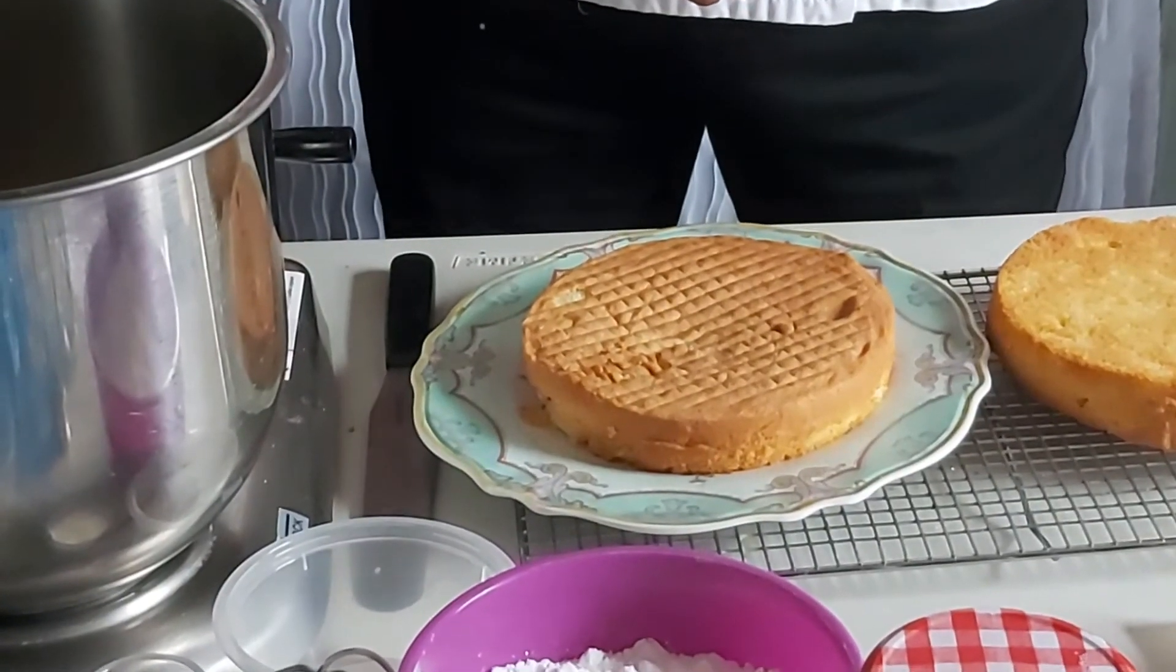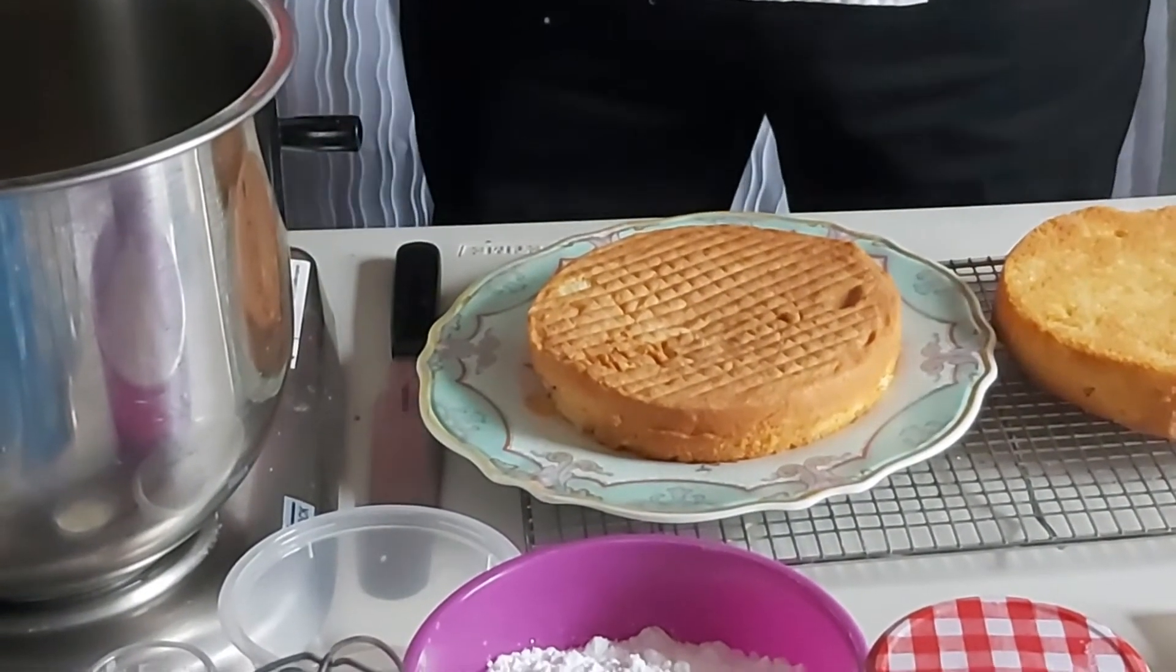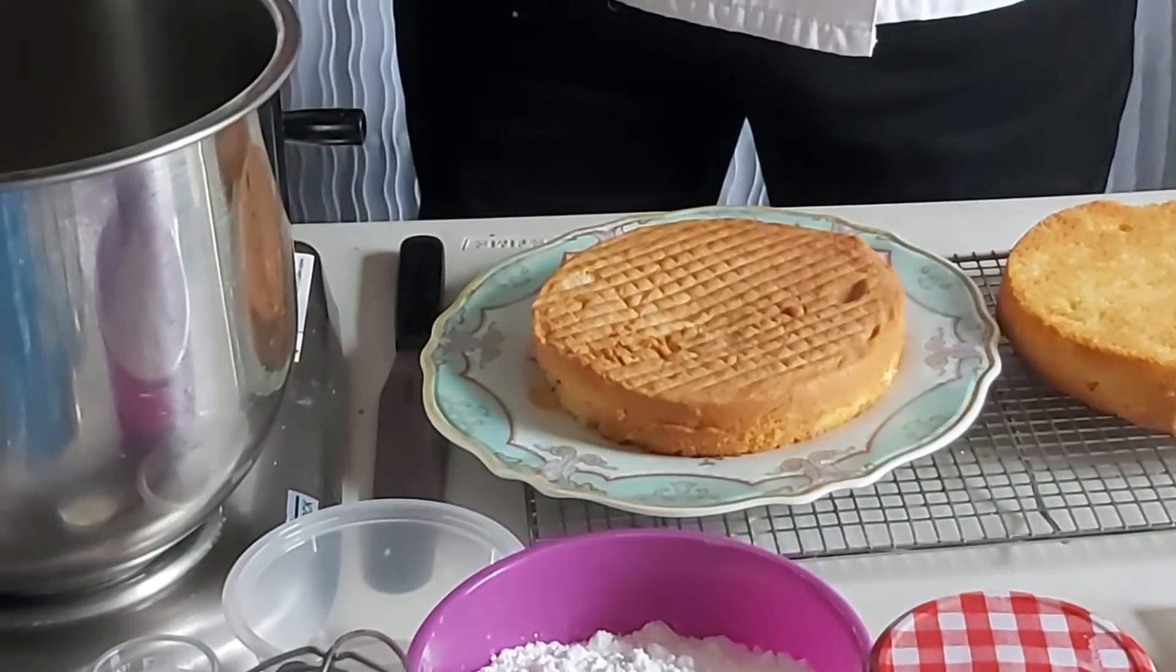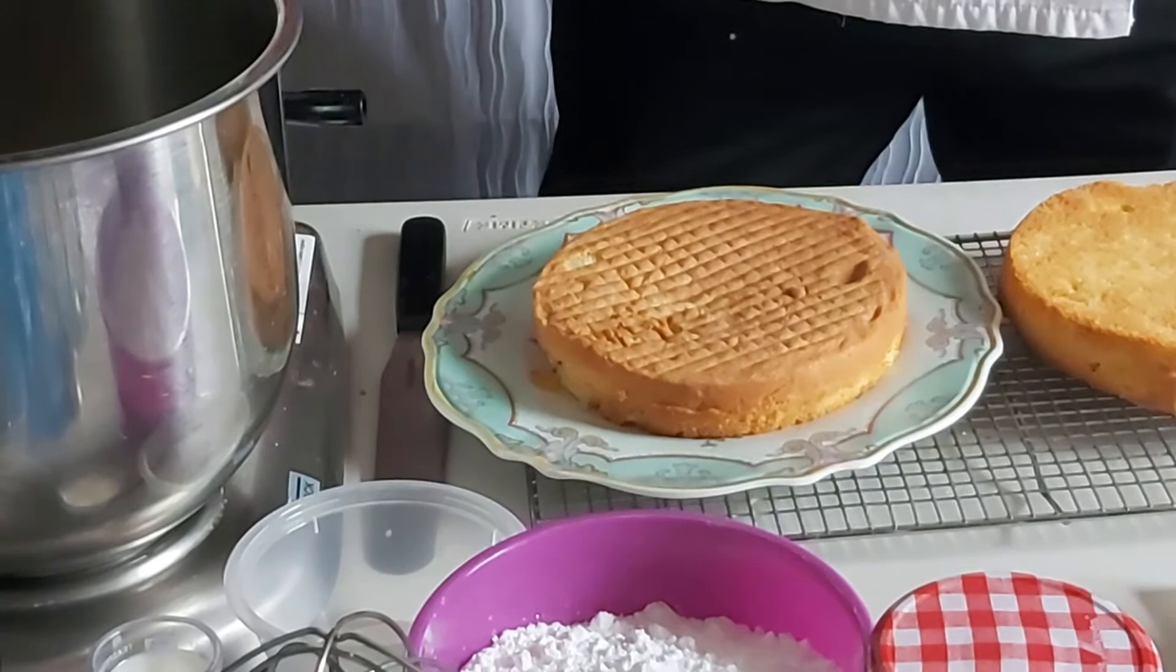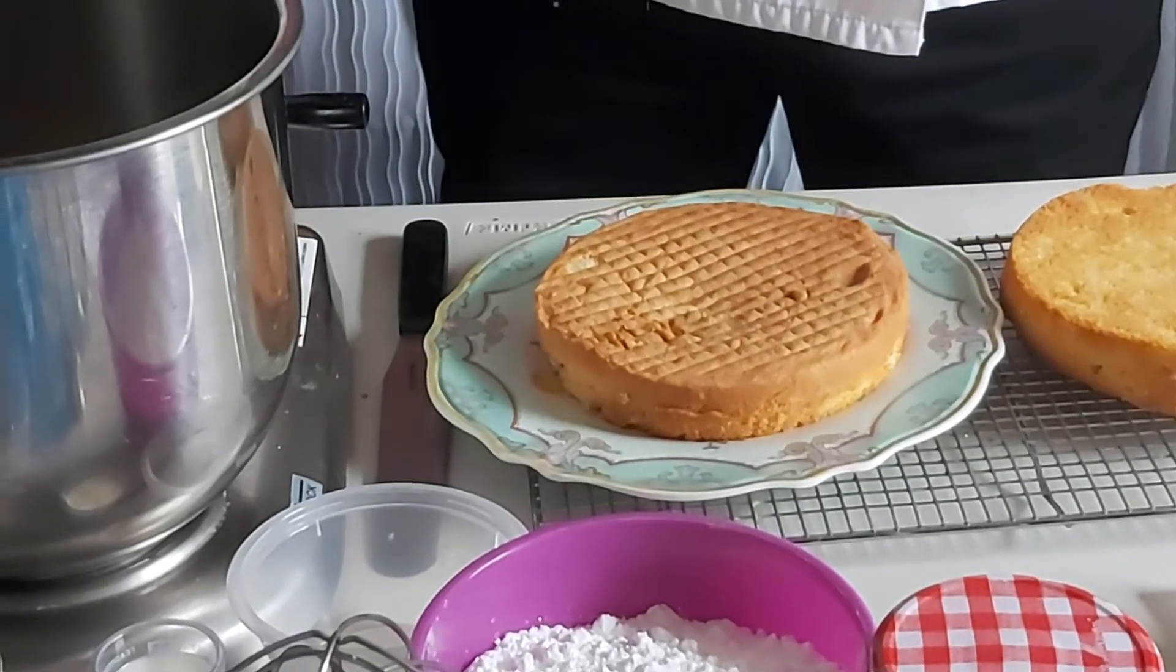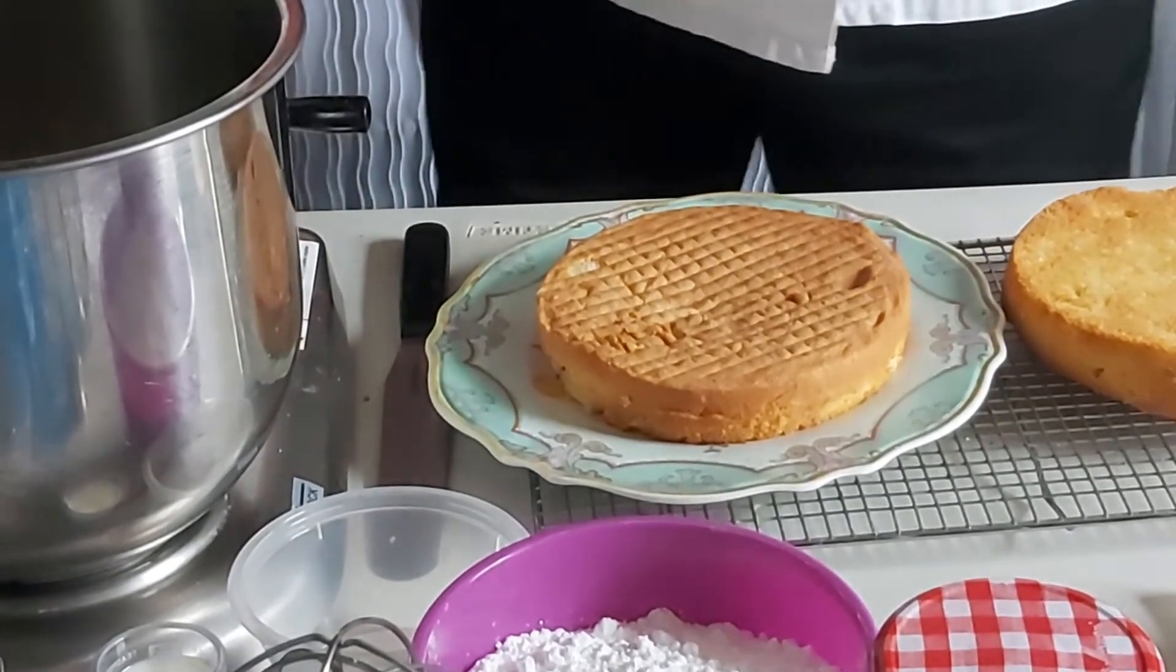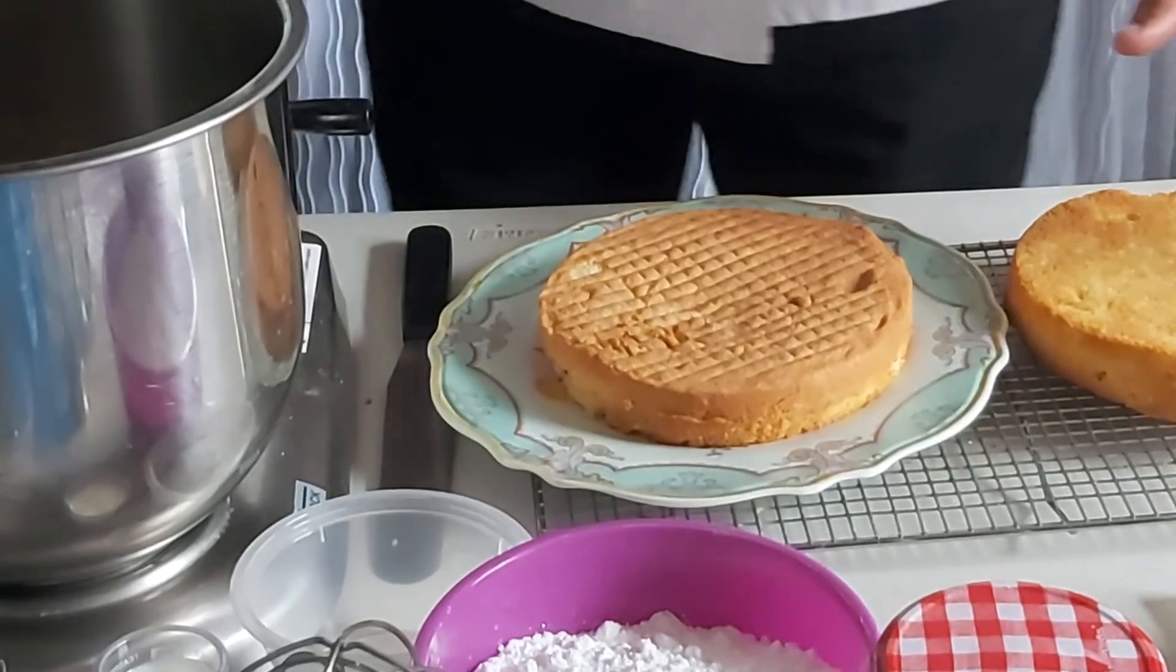Right okay, so to test the sponges if they're done use a cocktail stick or wooden skewer and poke into the middle of the sponge and if it comes out with any kind of cake mixture on then it's not cooked. Just let it cool down on the wire rack and then get ready to do the icing.